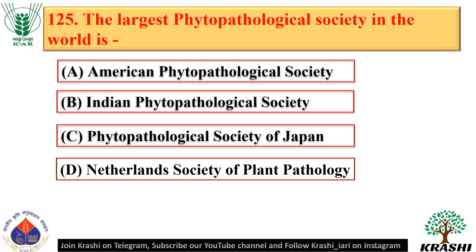Question number 125. The largest phytopathological society in the world is the American Phytopathological Society — option A.